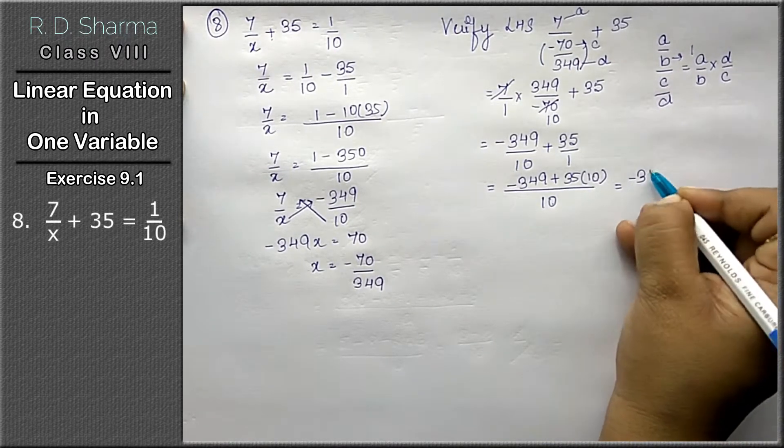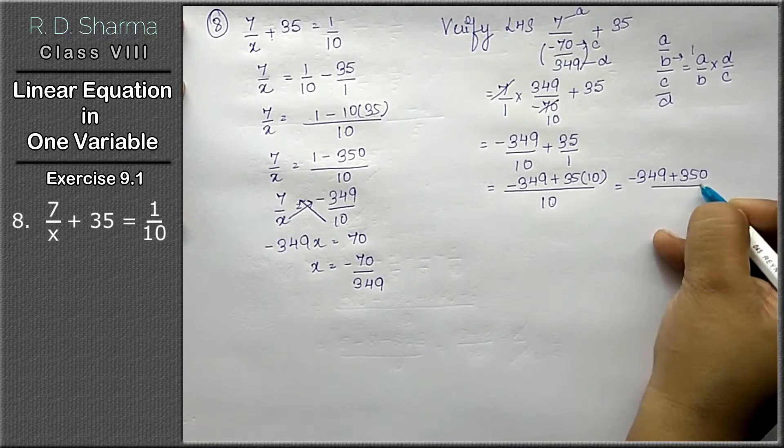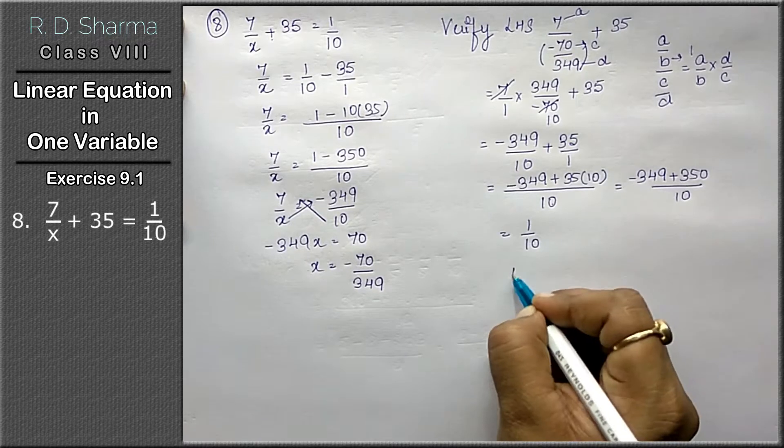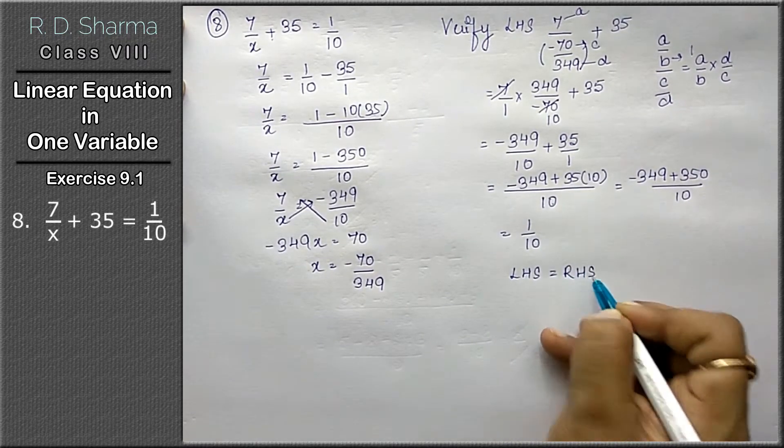Kya aagaya? Minus 349 plus 350 upon 10, answer will be 1 upon 10. That means left-hand side is equals to right-hand side.